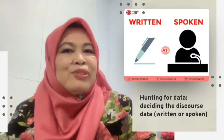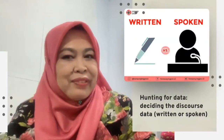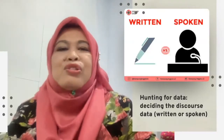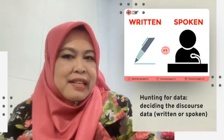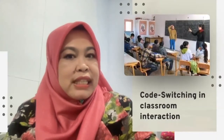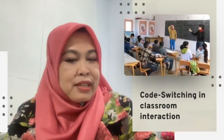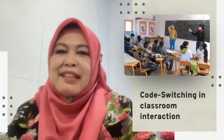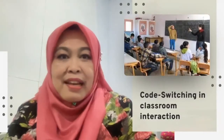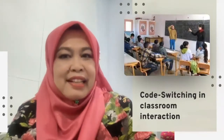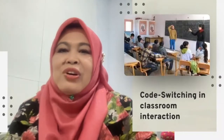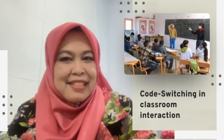Remember, you need to locate the data collection activities by deciding the type of data, whether it is written or spoken. For example, our topic is code switching in the classroom. So the kinds of data that we need is spoken data. Let's attend some classes and have some recordings. Let's observe the teacher and students interaction and record their communication in the class.